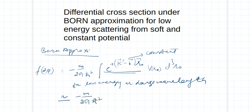minus m over 2π ℏ² and it's into, because this is a constant, so it is V(r) d³r. That's what we are getting, so this is the low energy scattering amplitude. Once I know the scattering amplitude, now let us define a constant potential.